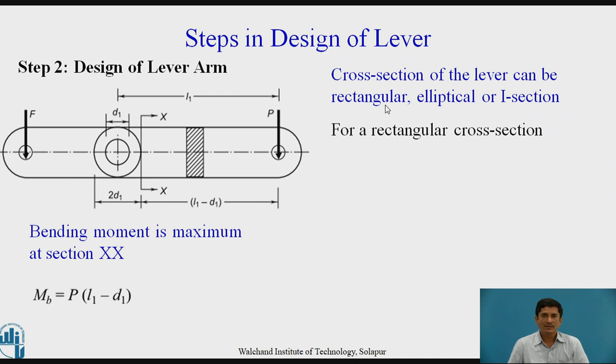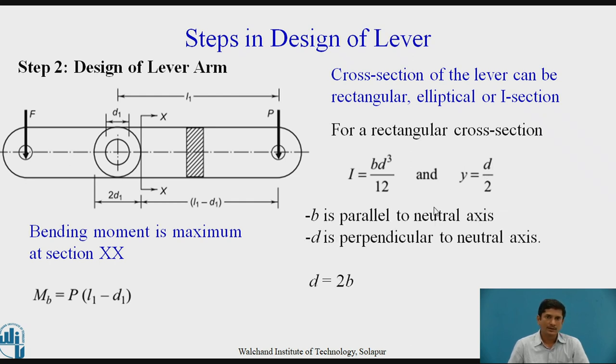Cross section of the lever can be rectangular, elliptical, or I-section. Let us take the case of rectangular cross section. For a rectangular cross section, I equals BD³ by 12 and Y becomes D by 2, where B is parallel to the neutral axis and D is perpendicular to the neutral axis. And the condition is D equals 2 times B.